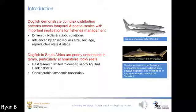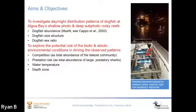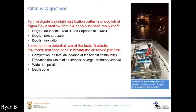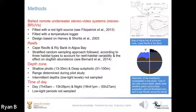To investigate the day and night distributions of dogfish at Algoa Bay's shallow photic and deep subphotic reefs, we investigated dogfish abundance in the form of MaxN, size structure, and sex ratio, and explored the role of biotic and abiotic environmental conditions driving the observed patterns — looking at competition, predation risk, water temperature, and depth zone. Baited remote underwater stereo video systems, or stereo BRUVs, fitted with a red light source and temperature logger, were used as the sampling method. Two reefs — Cape Recife and Rye Banks — were sampled according to a stratified random sampling approach with three habitat types: high profile reef, low profile reef, and intermittent sandy reef patches.